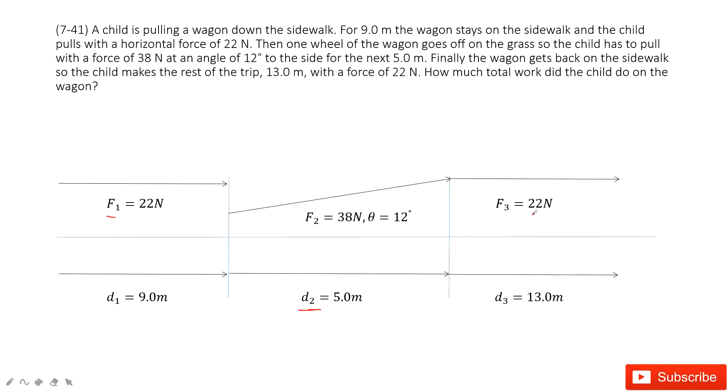The third one, F3, is 22 N but it's still horizontal. The D3 is 13 meters.